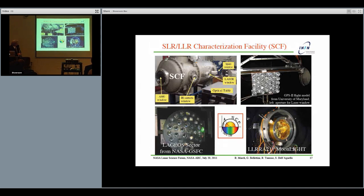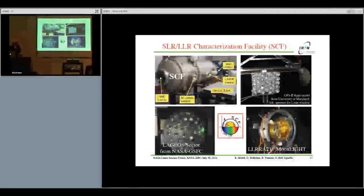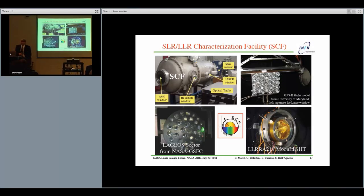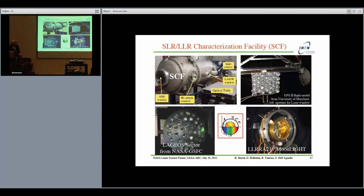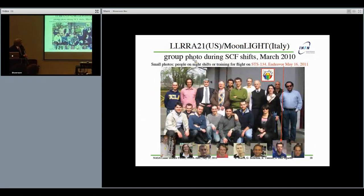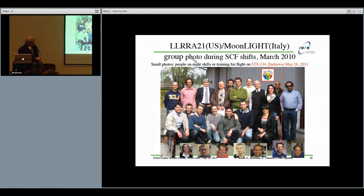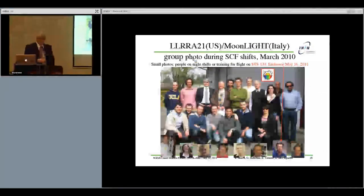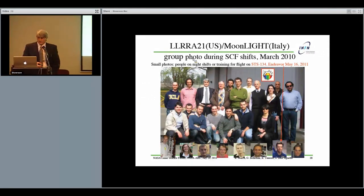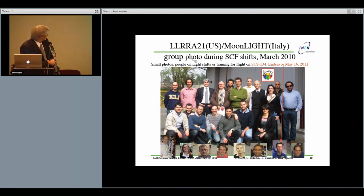We have started with a GPS-2 retroreflector flight model which was given to us by the University of Maryland. We have tested that in Frascati in this facility. This facility provides the lunar environment because it provides the vacuum, the dark, but also the radiation spectrum of a high-fidelity lunar solar simulator from this window. We then tested a model of the laser ranging retroreflector array from Goddard, and we are now testing the lunar reflector again in collaboration with Doug Currie.